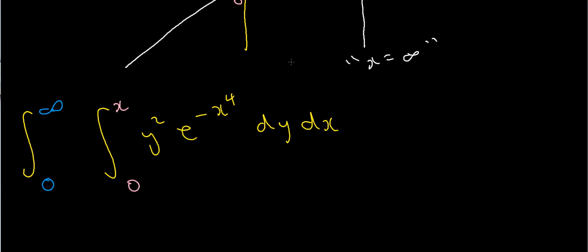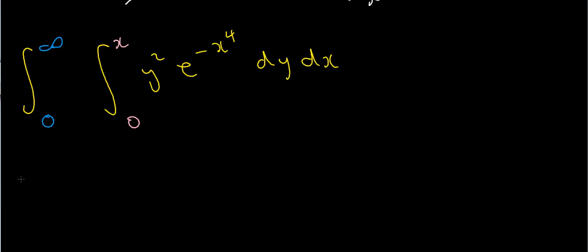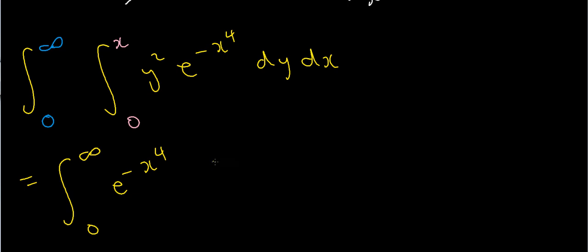Can I now do the integral? I've got y squared e to the minus x to the 4 dy. The e to the minus x to the 4 doesn't depend on y, so I can treat it as a constant. The y squared term does depend on y and I can integrate that — it's just a polynomial. Leaving the outer integral from 0 to infinity, the inner integral is y squared dy from 0 to x. What's the integral of y squared? It's one third y cubed.